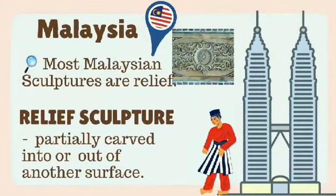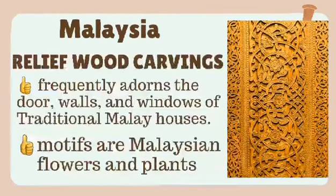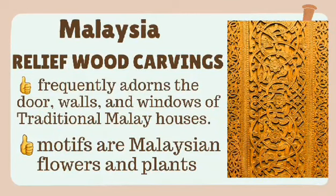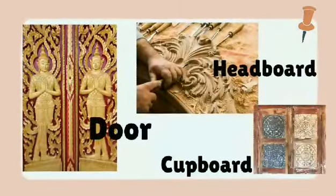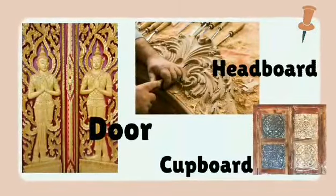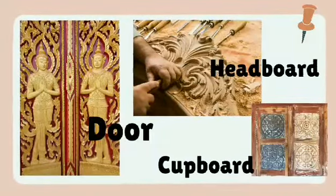In Malaysia, most sculptures are relief sculptures — meaning they are partially carved out of another surface. Relief wood carvings frequently adorn the doors, walls, and windows of traditional Malay houses. Motifs commonly feature Malaysian flowers and plants.